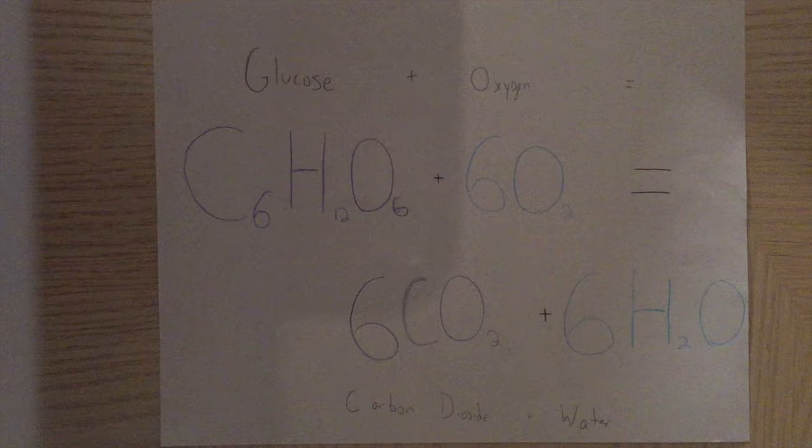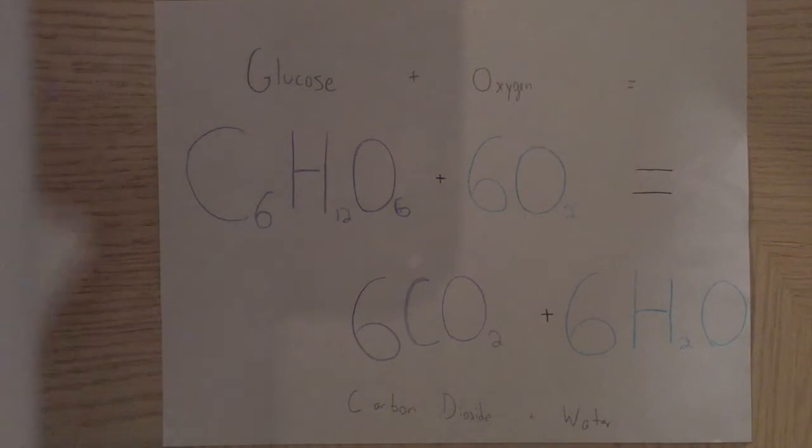Cellular respiration. Glucose, energy stored by photosynthesis, plus oxygen, what we breathe to assist the Krebs cycle, equals carbon dioxide, a byproduct of the Krebs cycle, plus water, hydrogen and oxygen bonded together, and most importantly, ATP, the usable form of energy.